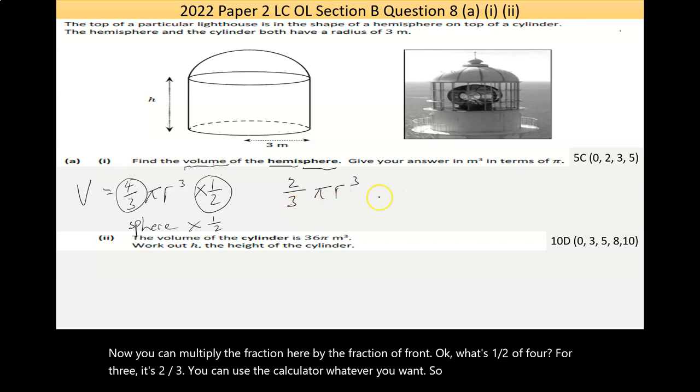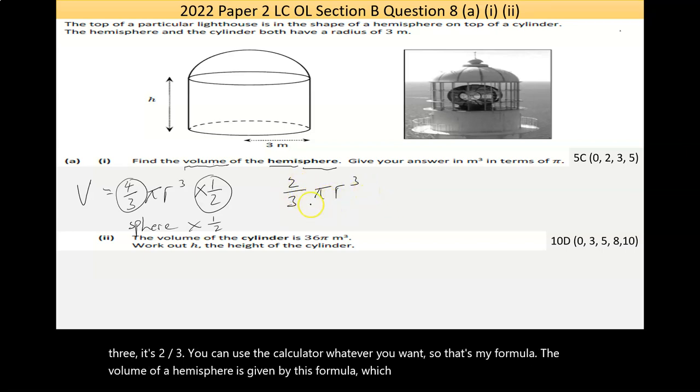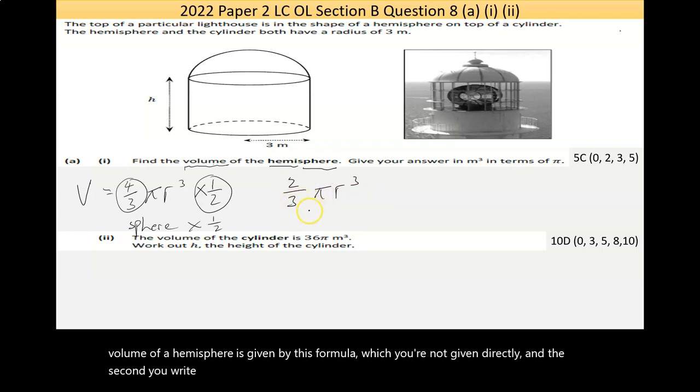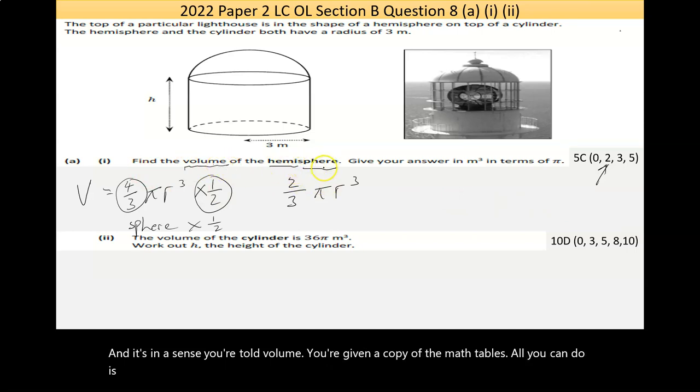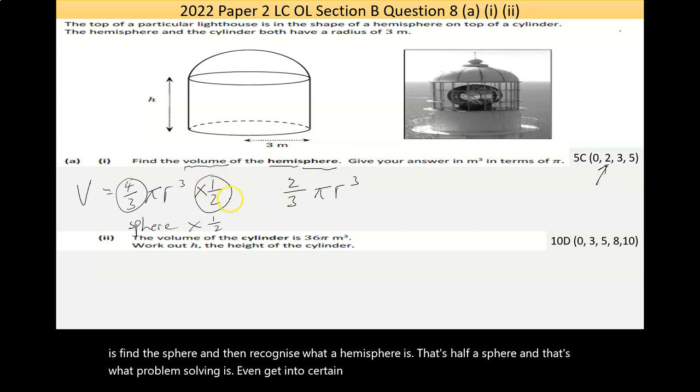The volume of a hemisphere is given by this formula, which you're not given directly. And the second you write that down or calculate it or even make an effort at it, you're probably going to be on the low partial. And in a sense, you're told volume. You're given a copy of the math tables. All you have to then do is find the sphere and then recognize what a hemisphere is that's half a sphere. And that's what problem solving is. Even getting to a certain part of that problem solving strategy should achieve you marks.